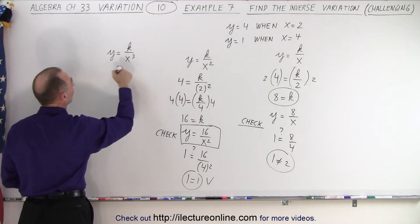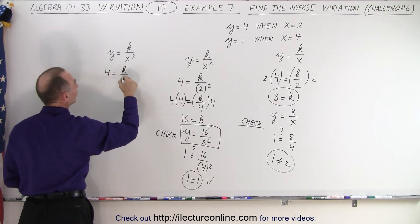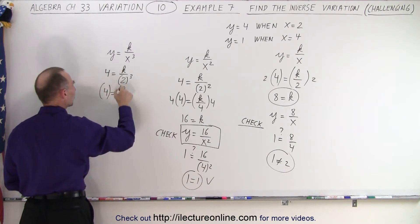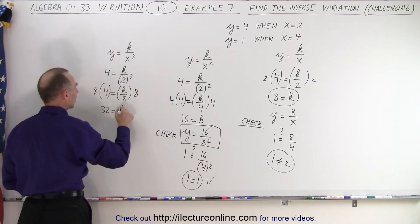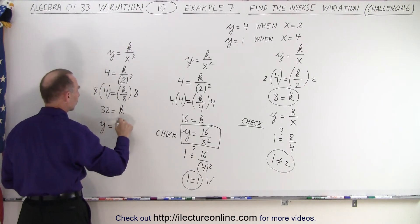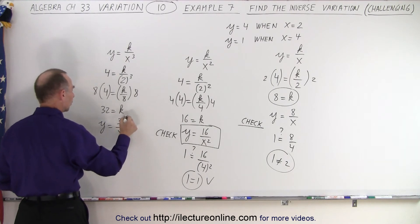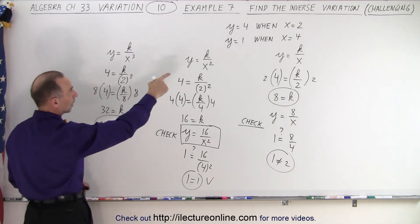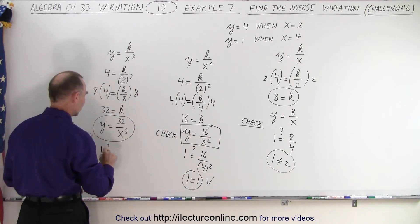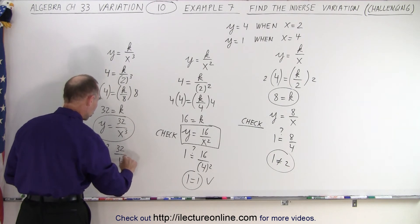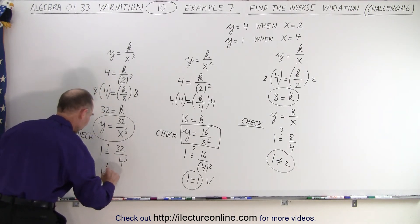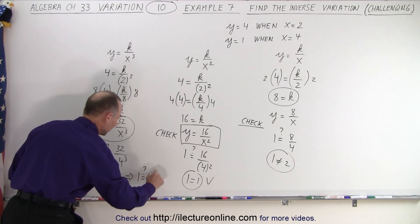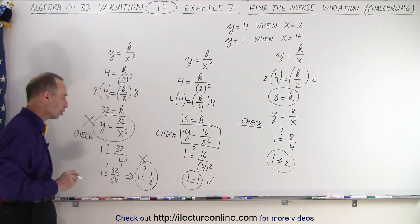Just to see what happens if we try the third one — we plug in the values for y and x. So y equals 4 equals k divided by x cubed, that's 2 cubed, which is 8. So 4 equals k divided by 8, and multiplying both sides by 8 gives us 32 equals k. So the equation would be y equals 32 divided by x cubed. Checking with the second set: y equals 1, x equals 4, so 1 equals 32 divided by 4 cubed. Since 4 cubed is 64, we get 1 equals 32 over 64, which is 1 half. That's not true, so that's not the right equation.